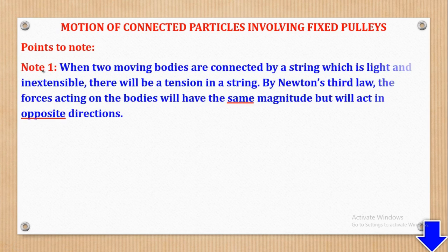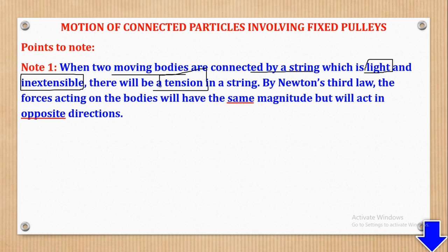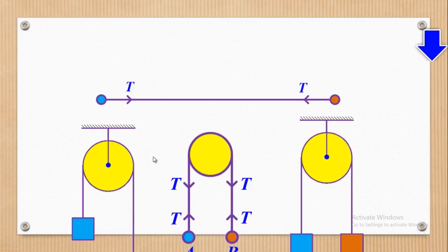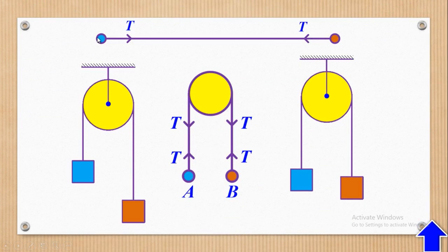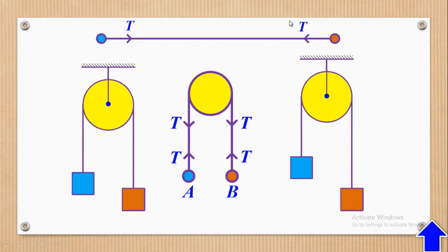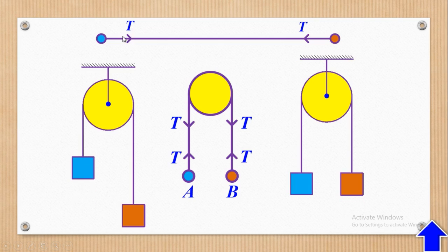There are some points to note before we go to examples. First, when two bodies are connected by a string which is light and inextensible, there will be a tension in the string, and by Newton's third law, the forces acting on the bodies will have the same magnitude but act in opposite directions.